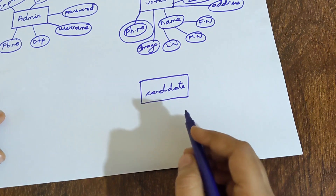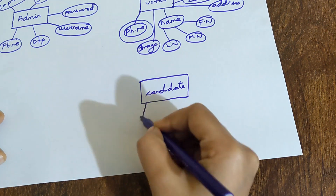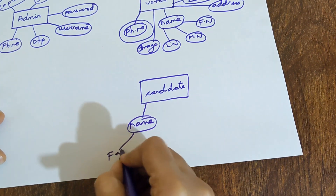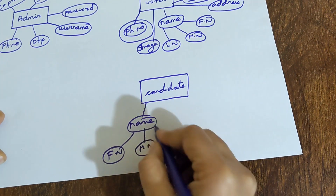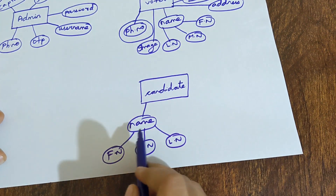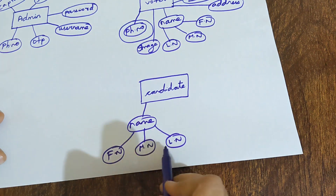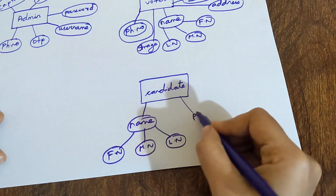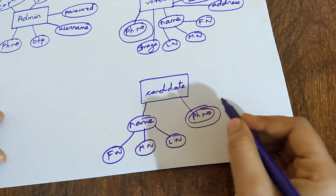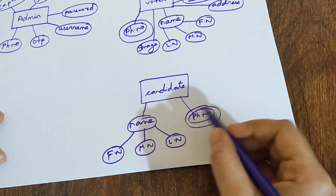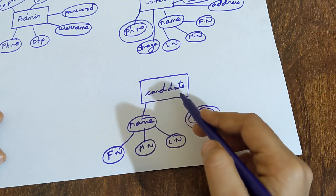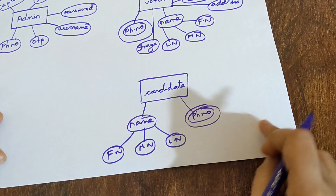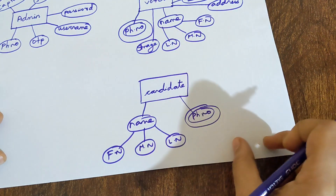Next, let us look into the attributes of the entity Candidate. Candidate will have a name which can be further divided as first name, middle name, and last name. Since you are able to divide this attribute further, it is known as a composite attribute. Next is the phone number of the Candidate, written inside double ovals because it is a multi-value attribute — the Candidate can have more than one phone number.